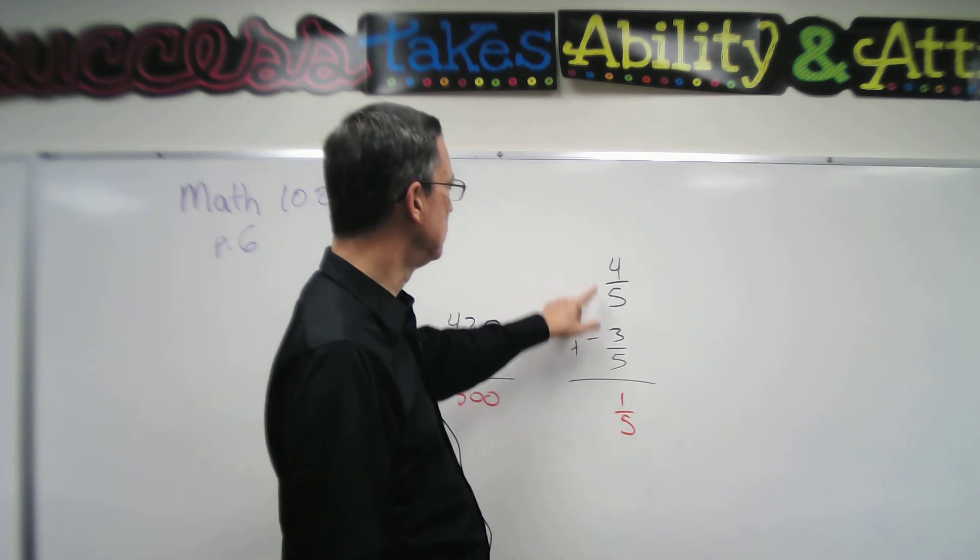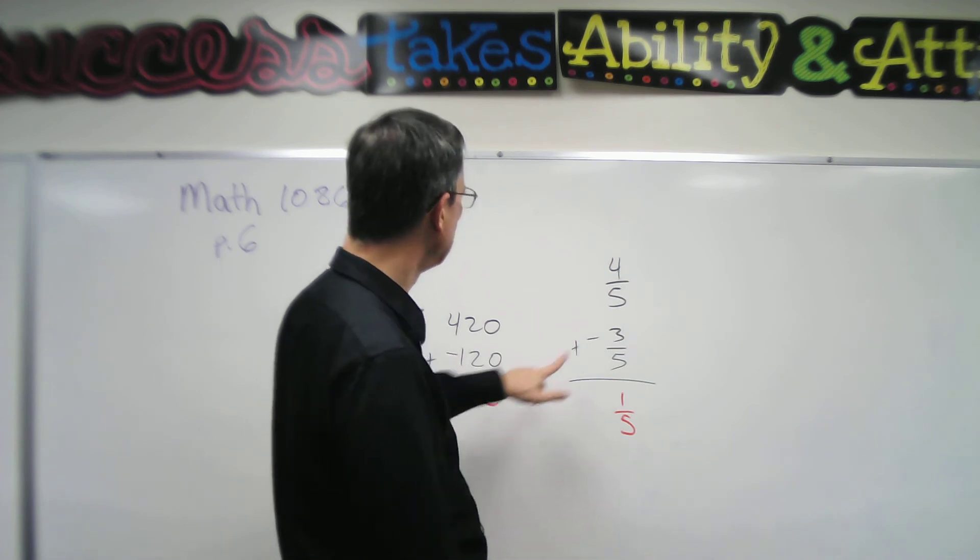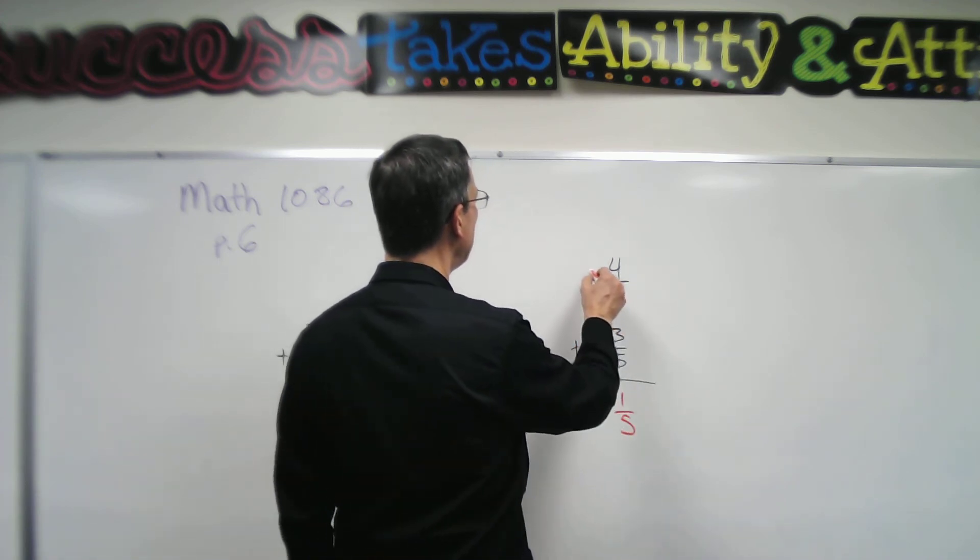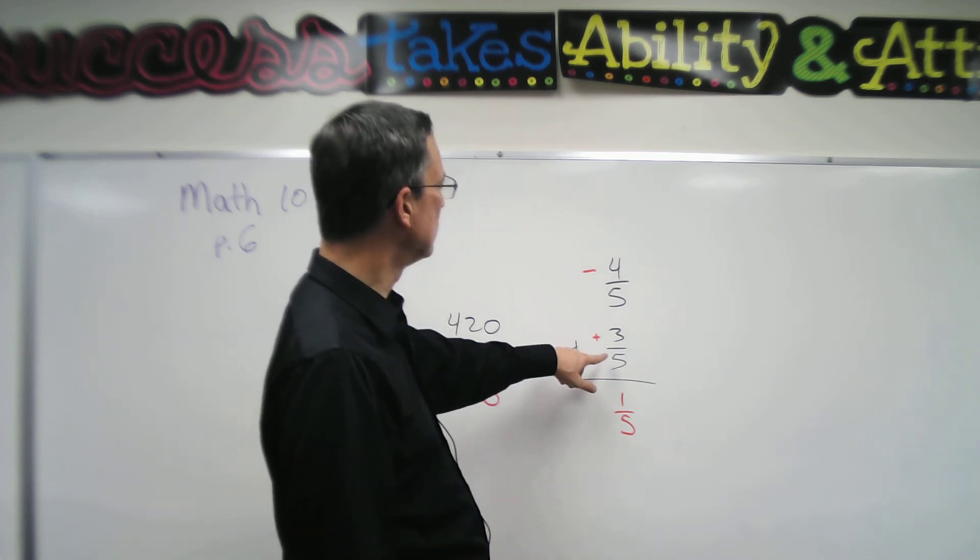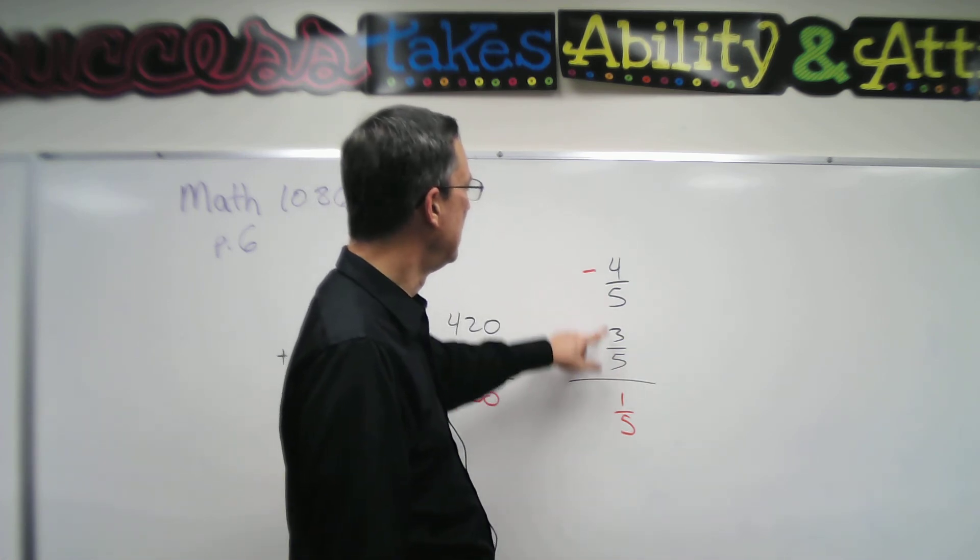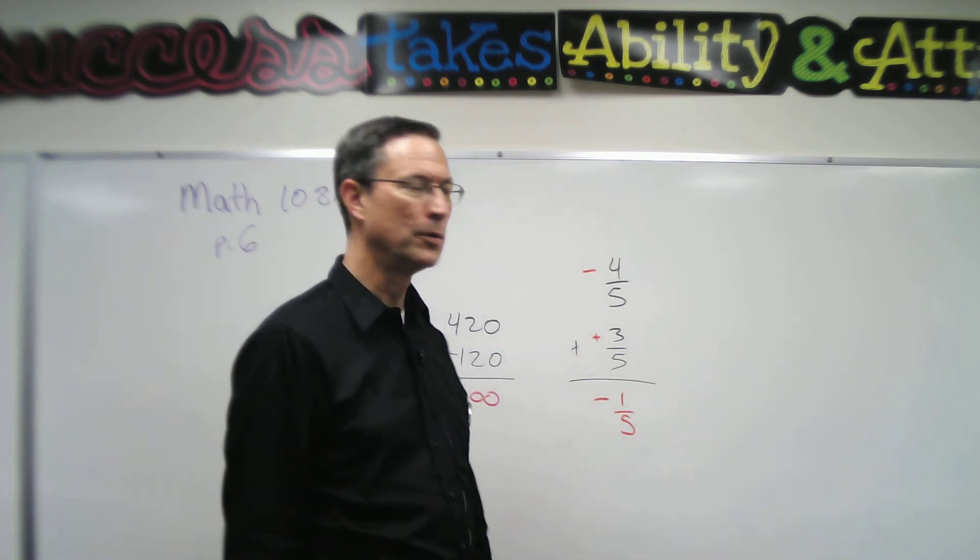And in this case, the answer - because this was larger - would be positive. Let's change this and say, what if that was negative and this one was positive? We would still subtract 3 fifths from 4 fifths and get 1 fifth, but then the answer would be negative 1 fifth.